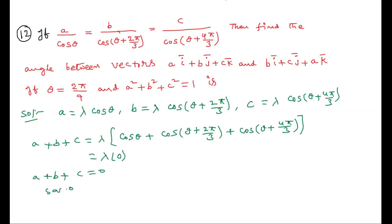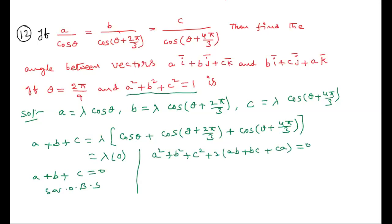Now squaring both sides of A + B + C = 0, we get A² + B² + C² + 2(AB + BC + CA) = 0. Since A² + B² + C² = 1, substituting and rearranging gives AB + BC + CA = −1/2.